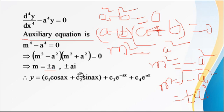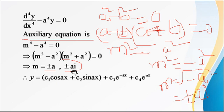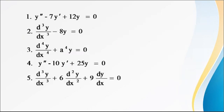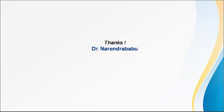Two roots are real and unequal (m = ±a) and two are imaginary (m = ±ai). For the imaginary roots, alpha = 0 and beta = a, so the CF contribution is c1 cos(ax) + c2 sin(ax). For the real distinct roots, we add c3 e^(ax) + c4 e^(−ax). The complete CF is y = c1 cos(ax) + c2 sin(ax) + c3 e^(ax) + c4 e^(−ax). Thank you.